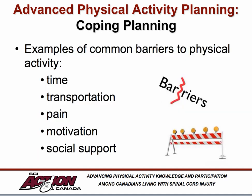When we use the term barrier, we are often referring to things that deter people from translating their good intentions into behavior — that is, from steering people away from participating in their activity plan. Some examples of common physical activity barriers for persons with spinal cord injury include lack of time, lack of transportation, pain, low motivation, and decreased social support. Some barriers may be more relevant to some people than others, so it is important to help clients identify barriers that are personally relevant.